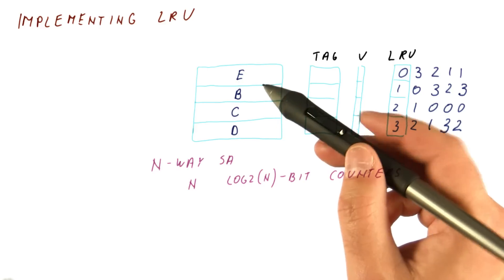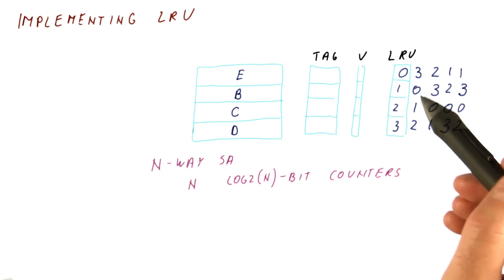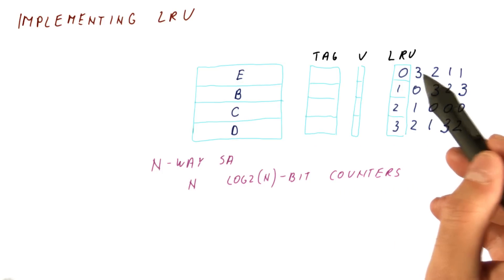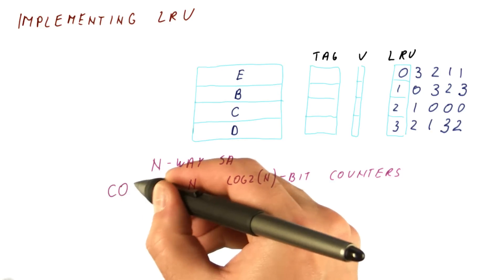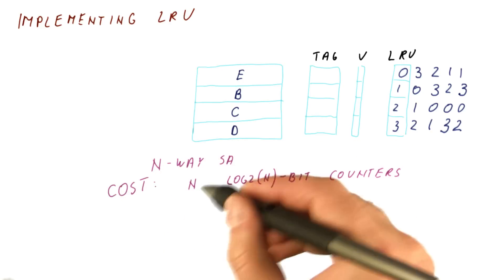So for highly associative caches, it's something like 32-way associative. You would need to have 5-bit counters and 32 of them per set. So this is the cost. It's pretty high.